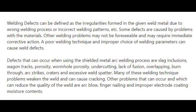Defects that can occur when using the shielded metal arc welding process are: slag inclusions, wagon tracks, porosity, wormhole porosity, undercutting, lack of fusion, overlapping, burn through, arc strikes, craters, and excessive weld spatter. Many of these welding technique problems weaken the weld and can cause cracking. Other problems that can reduce the quality of the weld are arc blow, finger nailing, and improper electrode coating moisture contents.